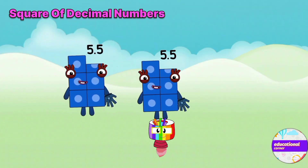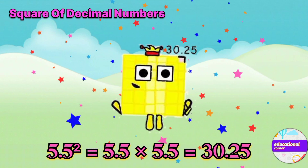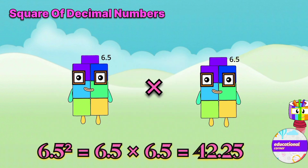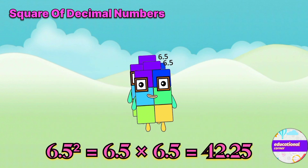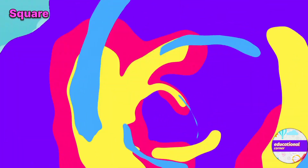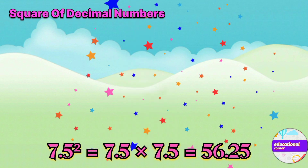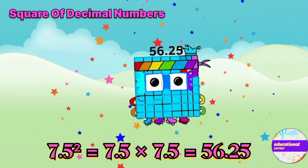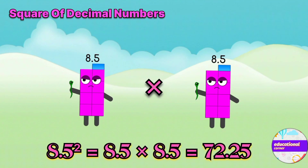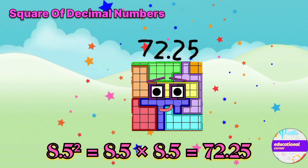The square of 5.5 is 30.25. 6.5 x 6.5 equals 42.25. 7.5 x 7.5, the answer is 56.25. The square of 8.5 is 72.25.